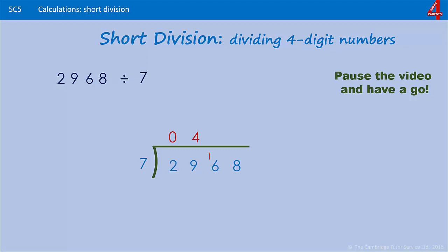We're going to put that one next to the next digit to make 16. Sevens into 16: two lots of seven is 14, so we can get two lots in there and we have two left over. Sevens into 28, that goes four times. 2968 divided by seven is 424.